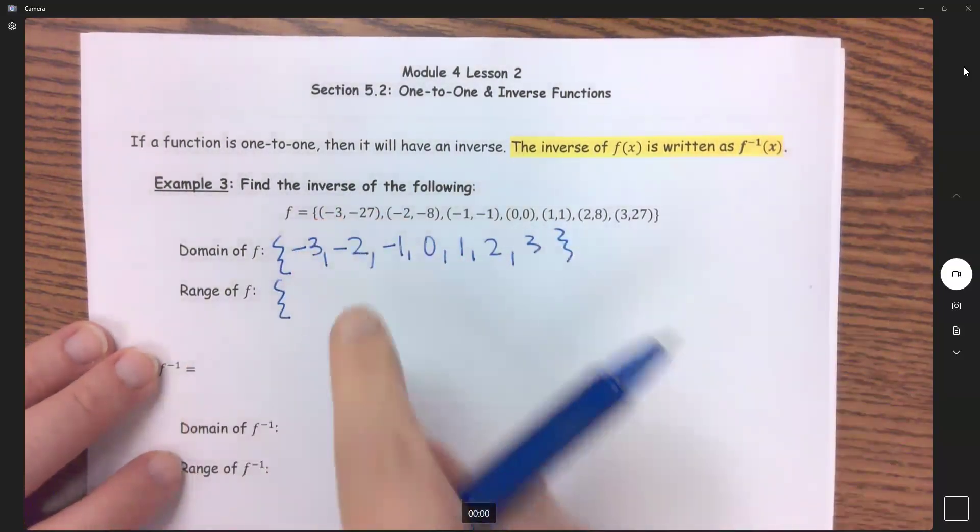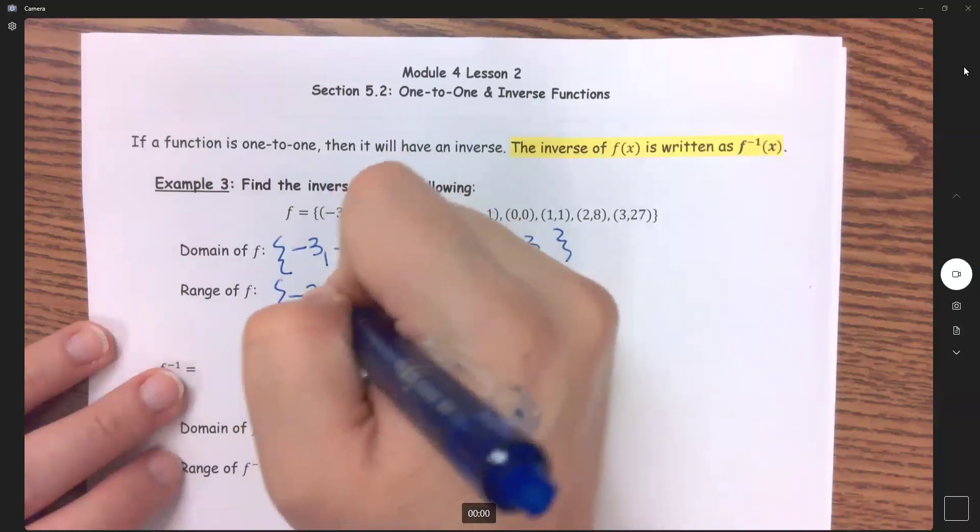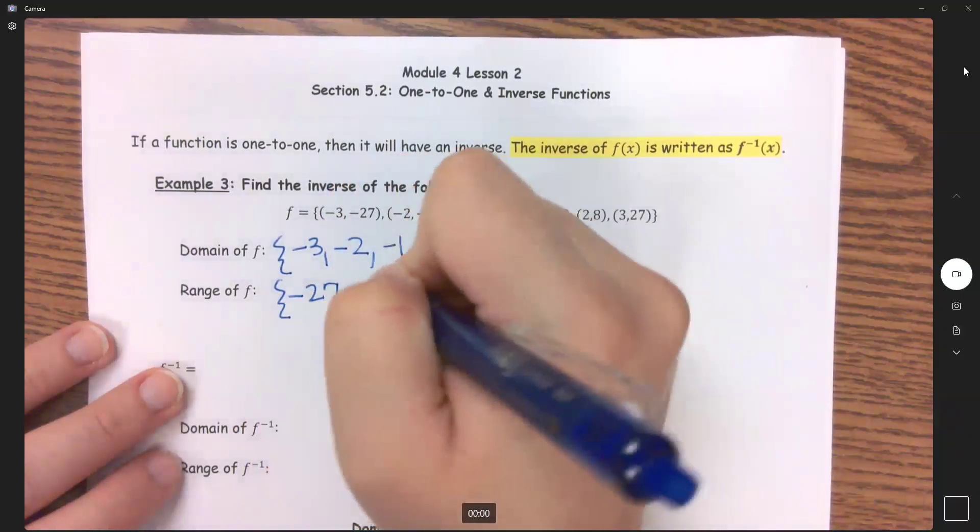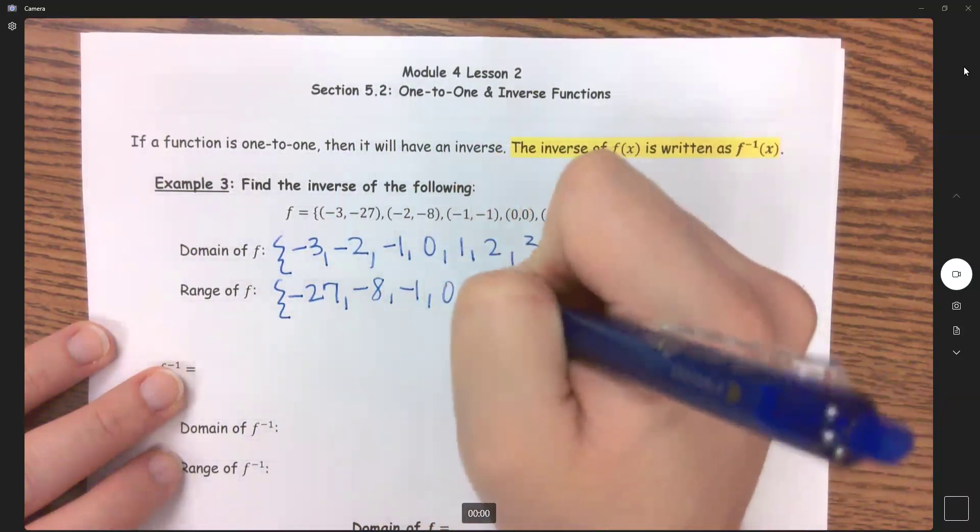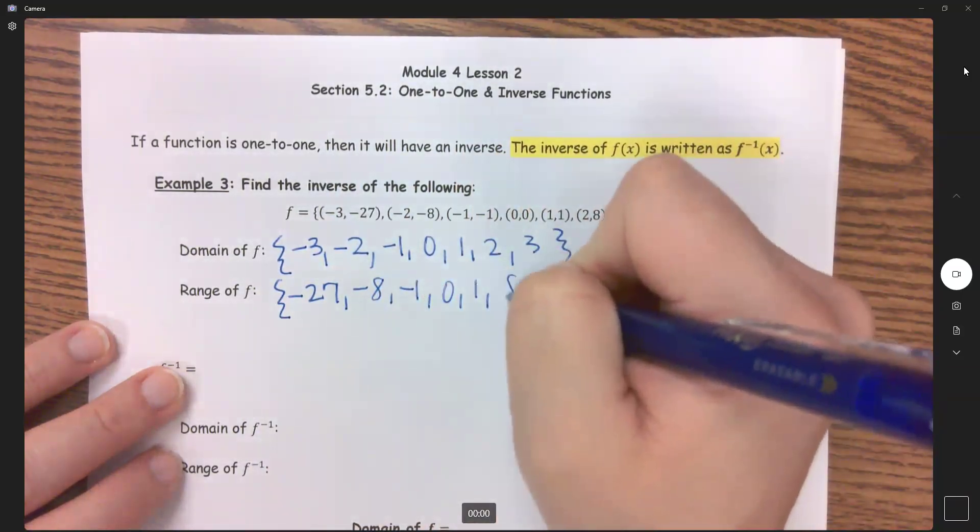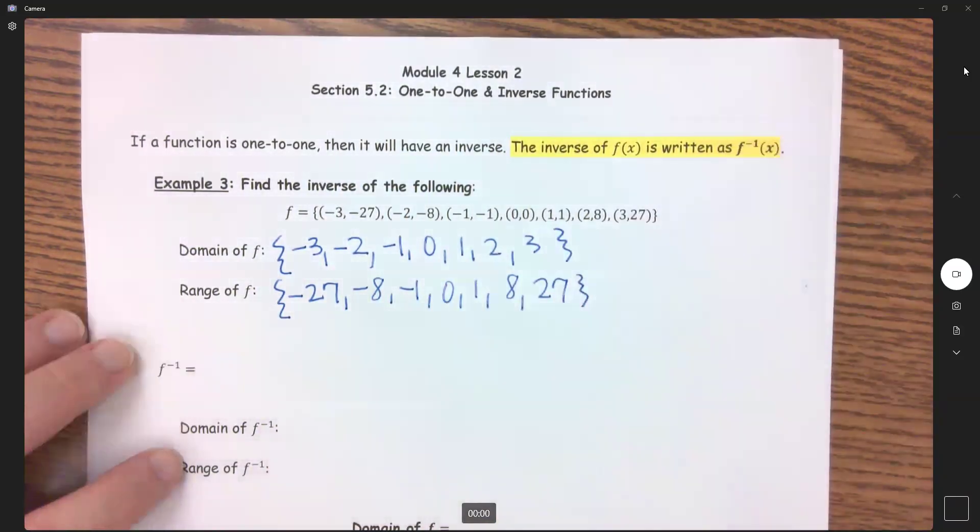So then my range is now all of my y coordinates. So we have negative 27, negative 8, negative 1, 0, 1, 8, and 27.